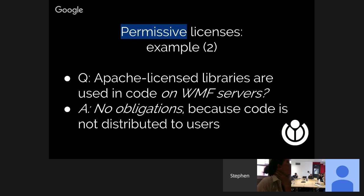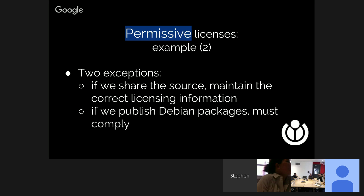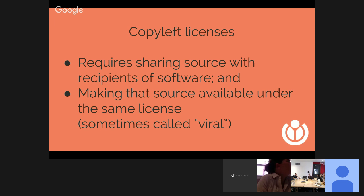If you use a permissive licensed library in a service where you're not actually distributing the binary source code, this is even simpler. When you're not distributing under a permissive license, the obligations don't come into effect — this is part of why people like permissive licenses. There are two exceptions to keep in mind: if you do share source code, you should always preserve the licensing information. And if you're putting source code into Debian packages or other distributed repositories, you might be required to include correct licensing information.